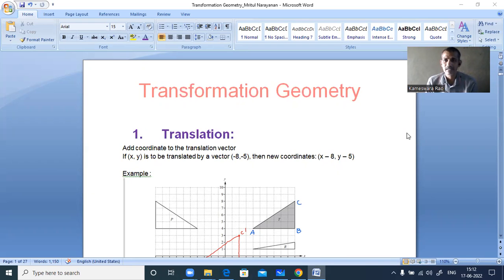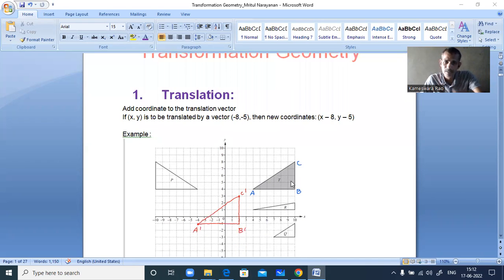To find the translation vector we just have to add the vector. In translation vector we have to add to the coordinates of the object. See here, in translation one object is moved from one place to another place.